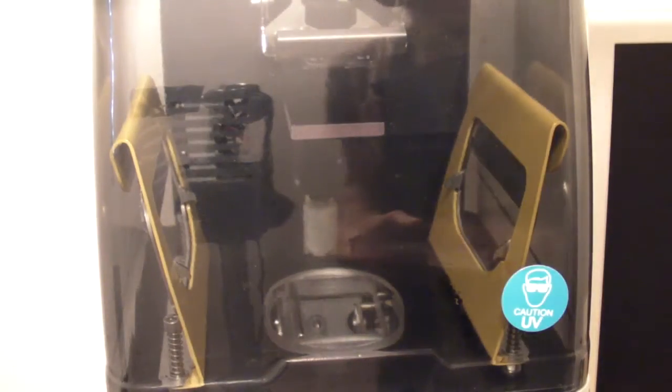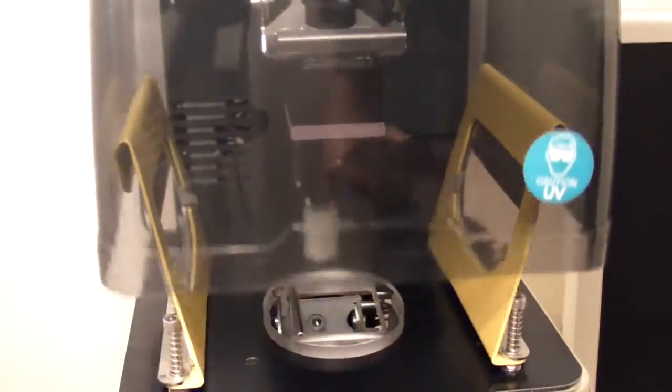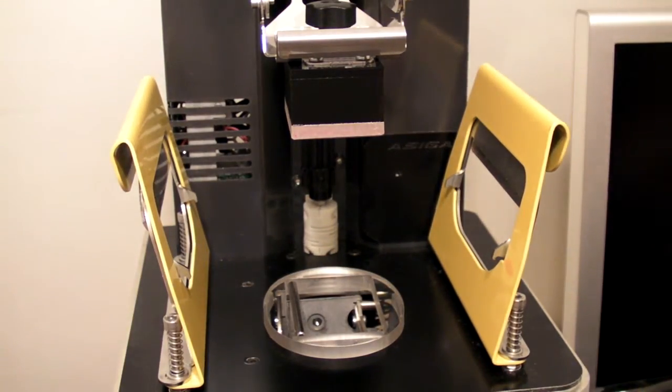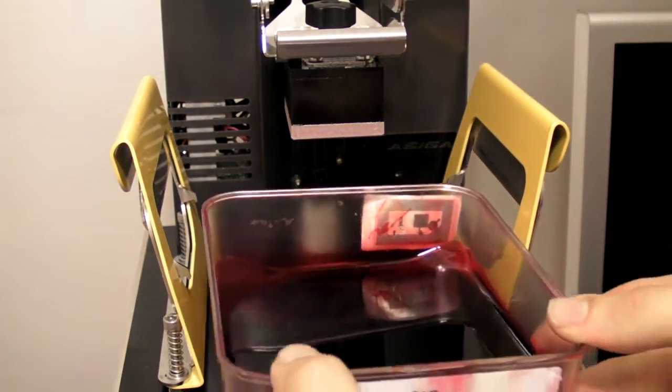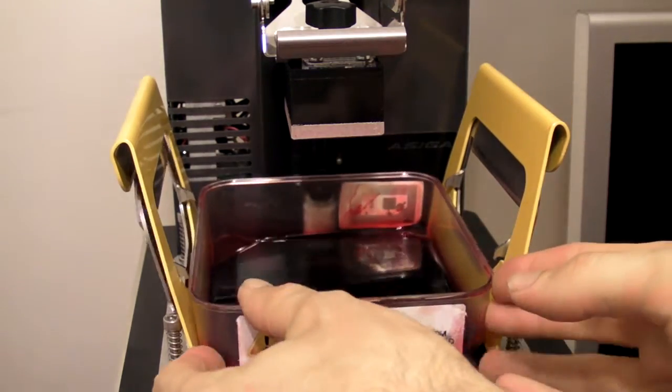The Pico uses SLA technology, so as opposed to a plastic extrusion printer, like a MakerBot for example, this machine prints from a vat of liquid resin.